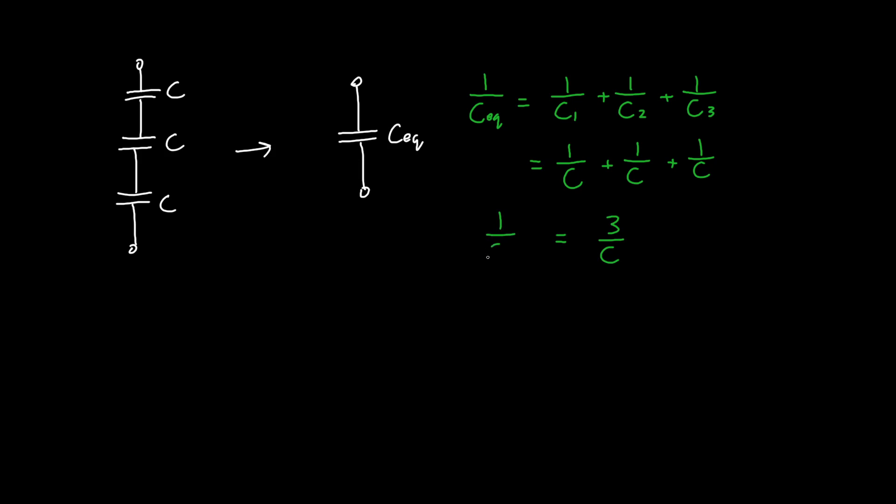Now, notice that if I were to tell you we had four capacitors or five capacitors, this number on the top would just be increasing. So we'd have an extra one over C, an extra one over C, or our equivalent capacitance is C over three. But if I instead had N capacitors, so if I had N capacitors in series, and they all have the same capacitance, then I can say that my equivalent capacitance is just C over N.